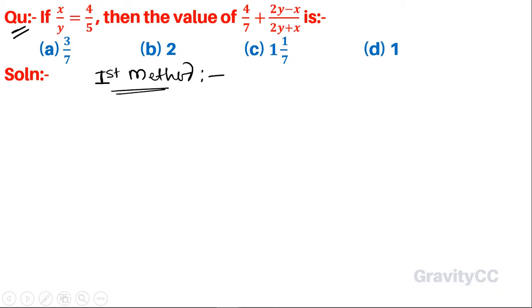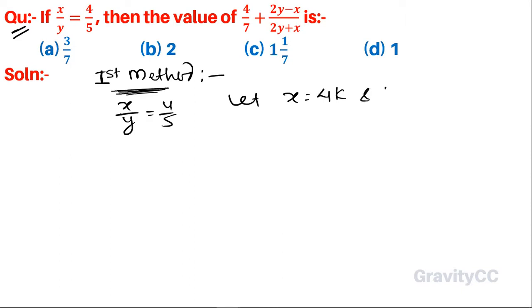Question: if x upon y equals 4 upon 5, then find the value of 4 upon 7 plus (2y minus x) upon (2y plus x). First method: since x upon y equals 4 upon 5, let x equal to 4k and y equal to 5k.